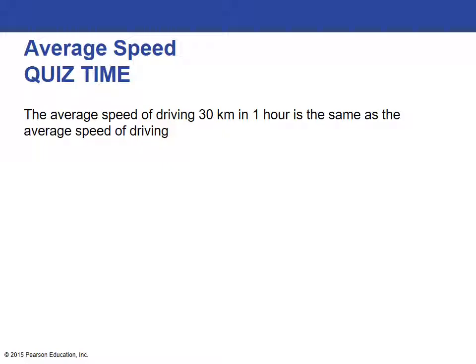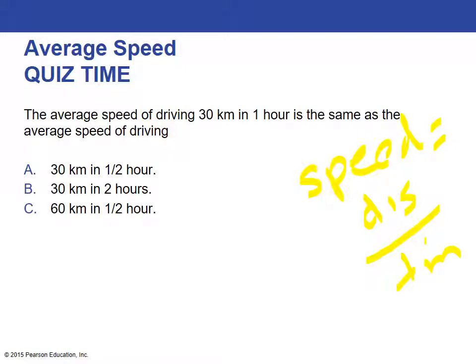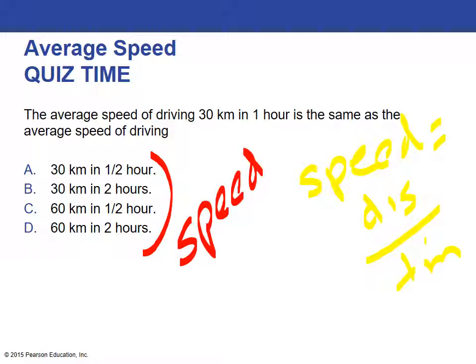Okay, quiz time. Try to work this out before you zoom ahead to the answer. Try to engage a little bit here and work it out. So I'm driving 30 kilometers in one hour. So my speed, remember your formula, is distance divided by time. The question here is, the speed of 30 kilometers in one hour, is that the same as 30 kilometers in a half hour, 30 kilometers in two hours, 60 kilometers in a half hour, or 60 kilometers in two hours? What speed is equivalent to this 30 kilometers per hour? You can work this out, or you might just do this one in your head.